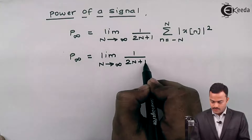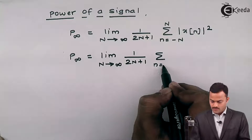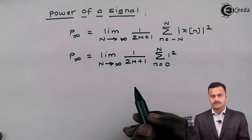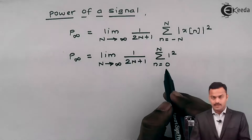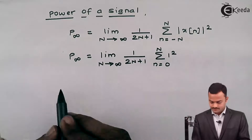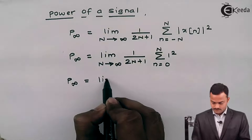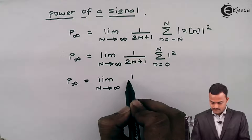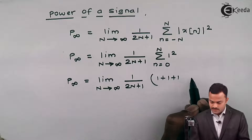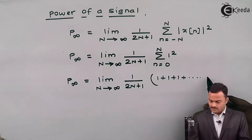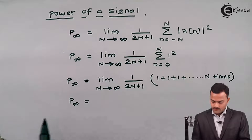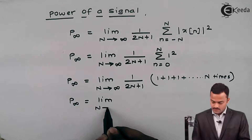The summation runs from 0 to N, and the signal has value 1, so it is 1². Here I need to add 1, but this time it won't be infinite — it will be restricted up to capital N. So this becomes 1 + 1 + 1 ... but only up to N times.